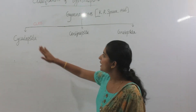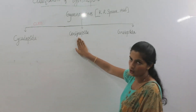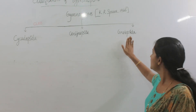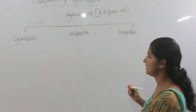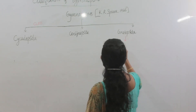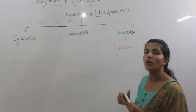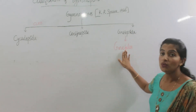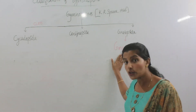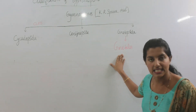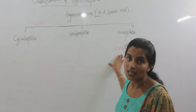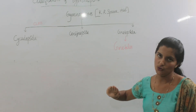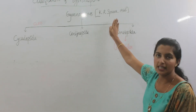We have discussed the classification of class Cycadopsida and Coniferopsida, both possessing four different orders. The final class is Gnetopsida. Gnetopsida possesses a single order, Gnetales. We already learned the characters of Gnetopsida — they are woody climbers or shrubs and show angiosperm-like characters such as the presence of xylem vessels, reticulate venation, and two cotyledons in the embryo. That is why the members of Gnetopsida act as a connecting link between gymnosperms and angiosperms.